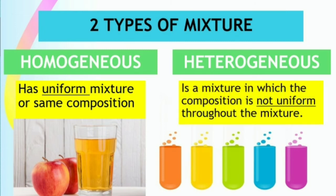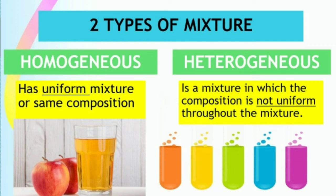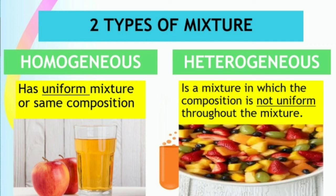On the other hand, heterogeneous mixture is a type of mixture in which the composition is not uniform throughout. 'Hetero' means different, therefore in the mixture you can see different compositions and different colors. Let us take for example this fruit salad — in a fruit salad mixture, you can clearly see and identify the different ingredients, and it is quite colorful compared to the apple juice.